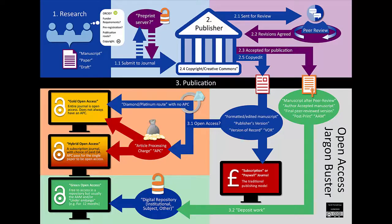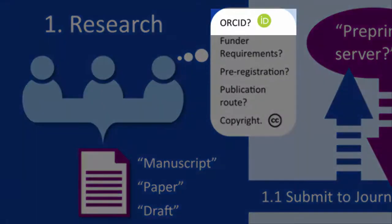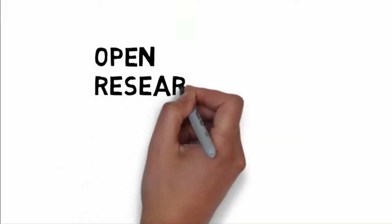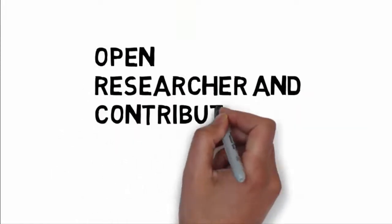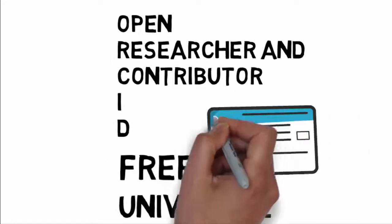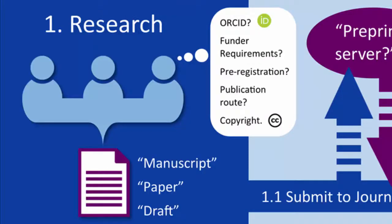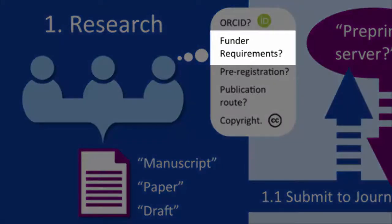Firstly, when initially creating your research — it could also be termed your manuscript, paper, or draft — it's best to ensure you have an ORCID. ORCID stands for Open Researcher and Contributor ID. ORCIDs are free to create and give you a universal identifier for all of your works. Having an ORCID is just one of many potential funder requirements.